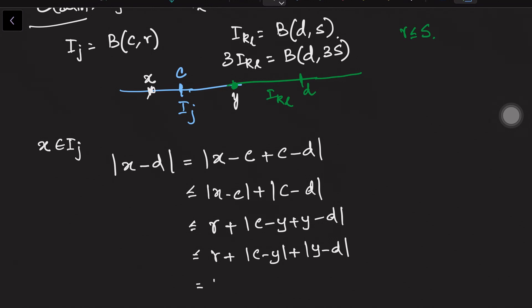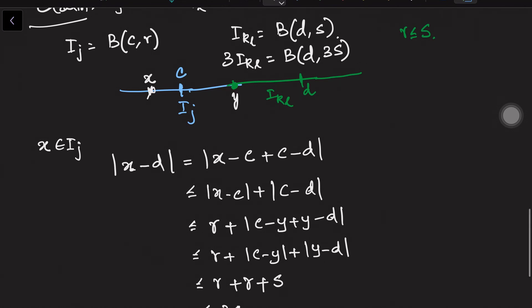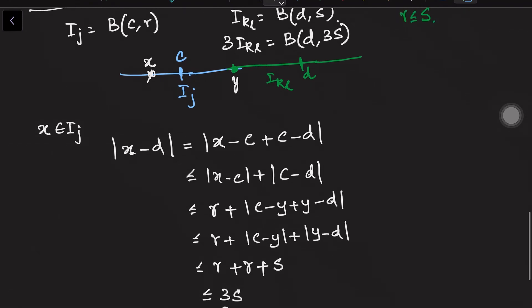So notice that this is r and this c is between c and y, it belongs to this set so it is less than or equal to r, and y and d, you have taken that point is also in the other side so it is less than s, and we use the fact that r is less than or equal to s and so we get it is less than 3s. So distance between x and d is less than 3s which means x belongs to ball centered at d of radius 3s which is what we want to prove.